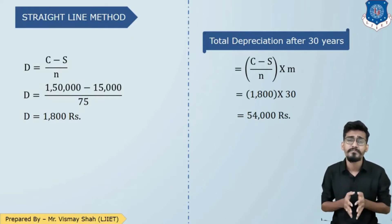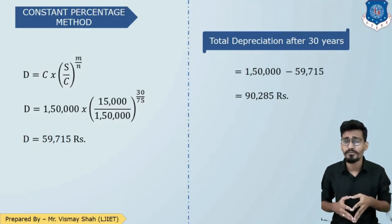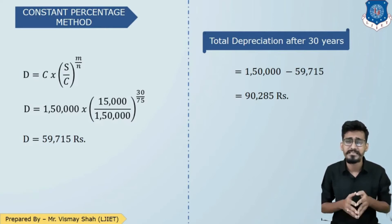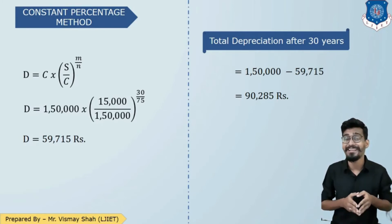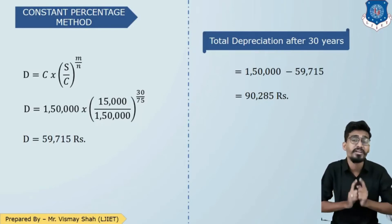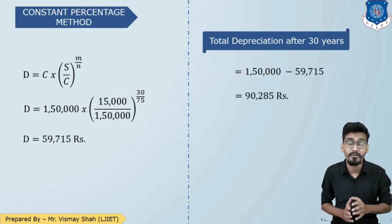Now using the constant percentage method: to find the depreciated value at the 30th year we use the direct formula c × (s/c)^(m/n). With c = 1,50,000, s = 15,000, m = 30, and n = 75, we get the depreciated value as 59,715 rupees. Subtracting from the original value of 1,50,000, the depreciation is 90,285 rupees. By straight line method it was 54,000, whereas by constant percentage method it is 90,285 rupees — you can see the difference.